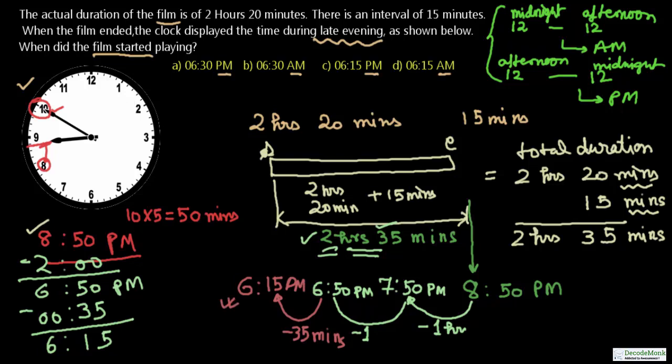The film started playing at 6:15 PM. We jumped back 2 hours and 35 minutes from 8:50 PM. You can also arrive at the answer by direct subtraction, but you need to visualize the clock carefully to avoid errors. The answer is 6:15 PM, which is option C.